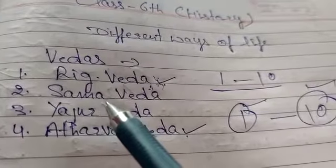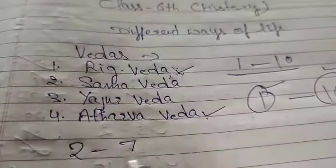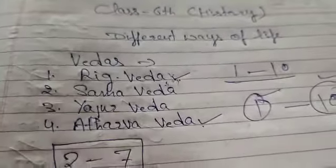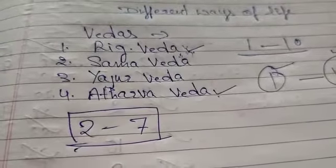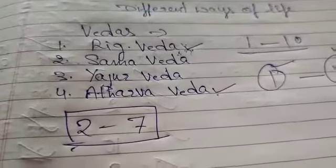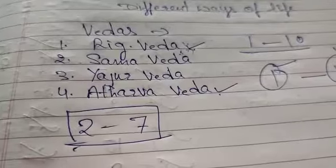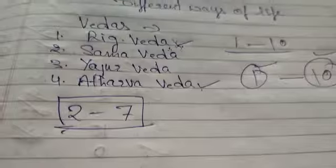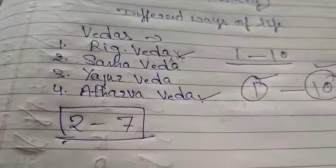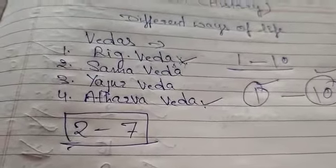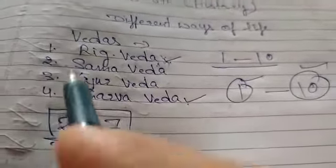Mandals two through seven are known as Vans Mandal. These are the ancient Mandals, and that is why they are called Vans Mandal. The most sacred and main river mentioned in the Rig Veda is the Saraswati river.